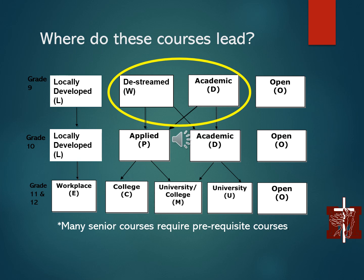Entering into grade 11, you will see that the grade 11 and grade 12 course descriptions have changed. No longer will you see grade 11 and grade 12 courses under the locally developed, applied, or academic label. If you have taken grade 9 and grade 10 locally developed courses, these courses will now appear as workplace level credits. If you have taken any classes at the applied level in grade 9 and 10, your options are to select grade 11 and grade 12 college or university/college level courses. Grade 9 and grade 10 academic courses now lead to courses under the university/college label or the straight university level label. Open level courses remain open and are open to all streams.